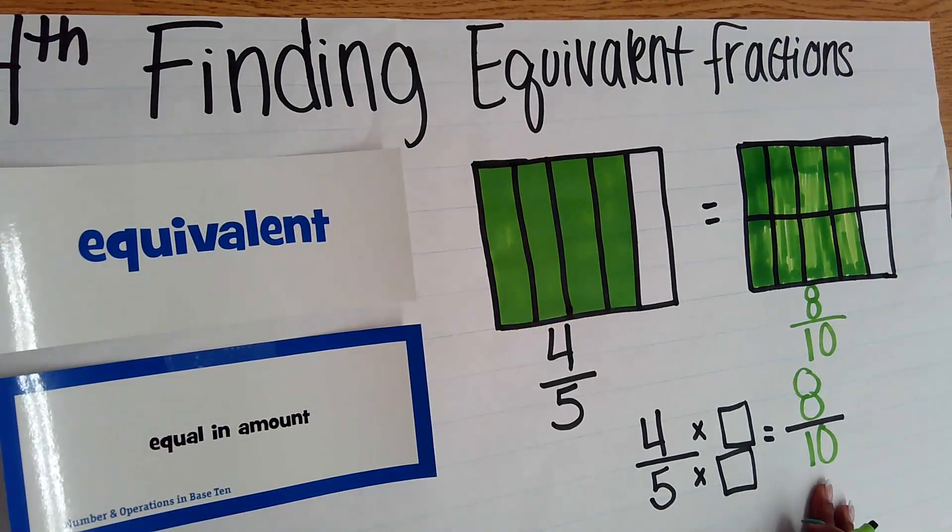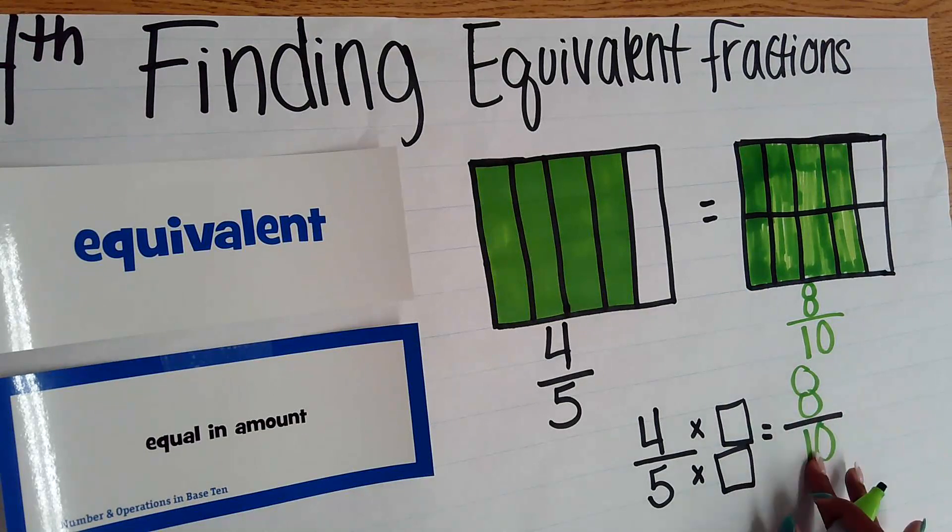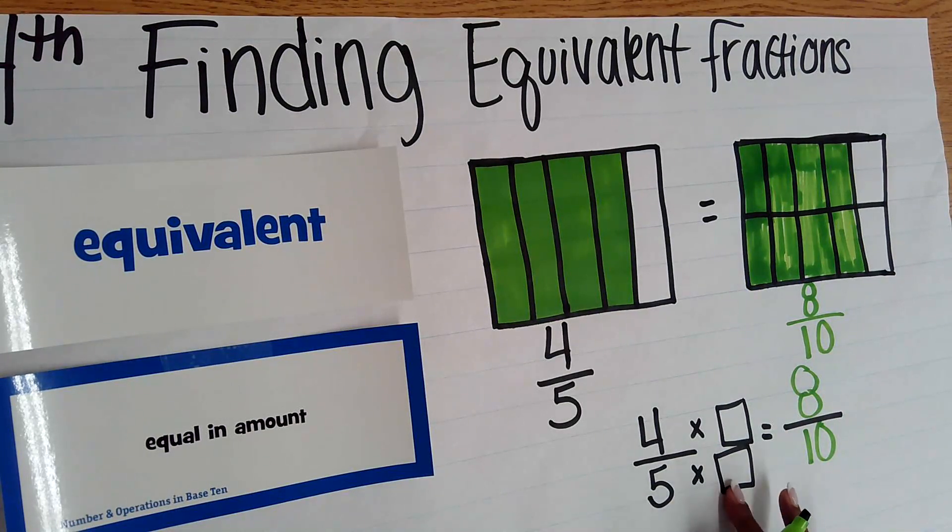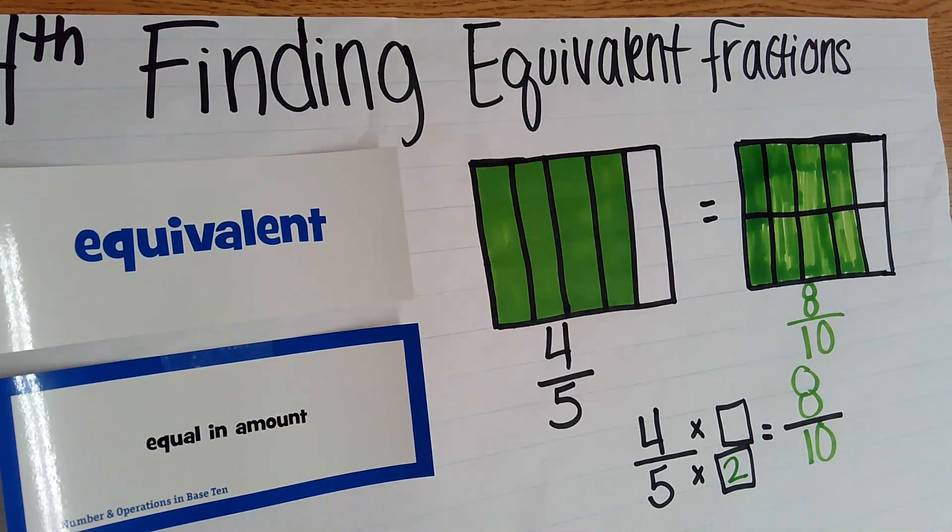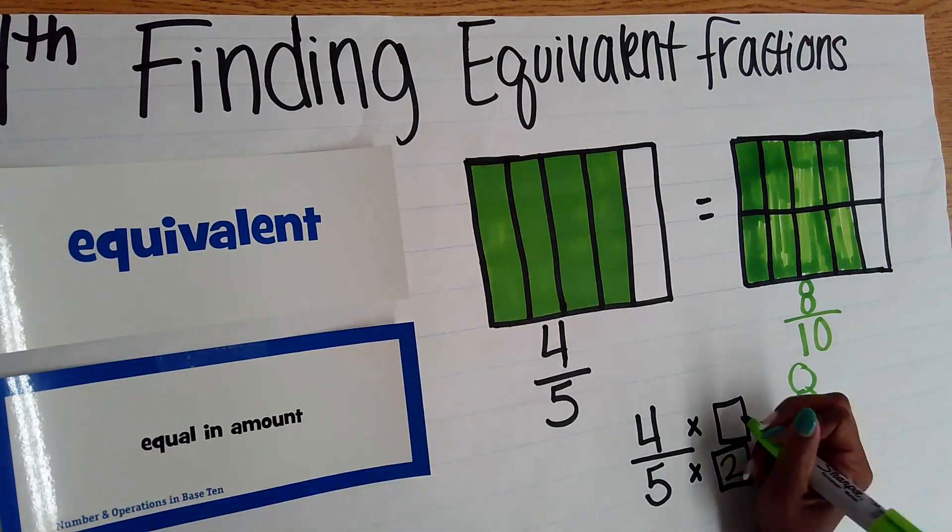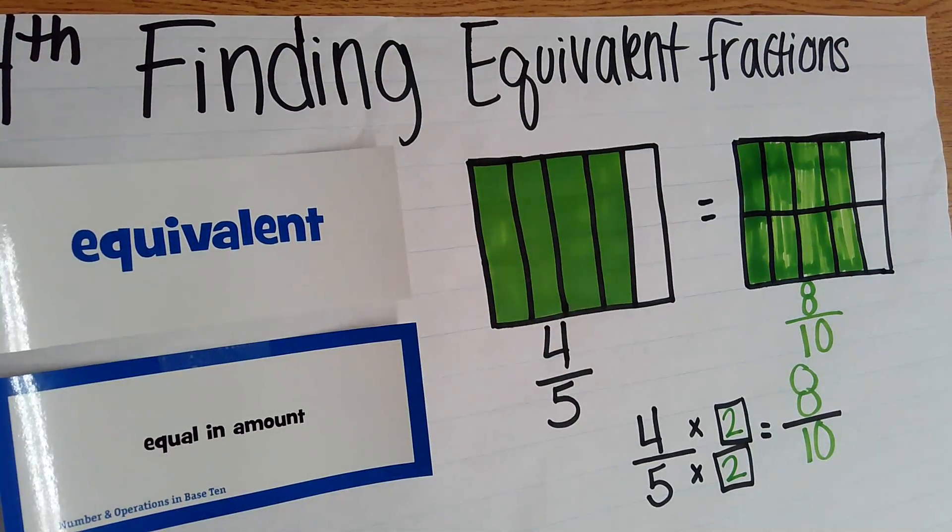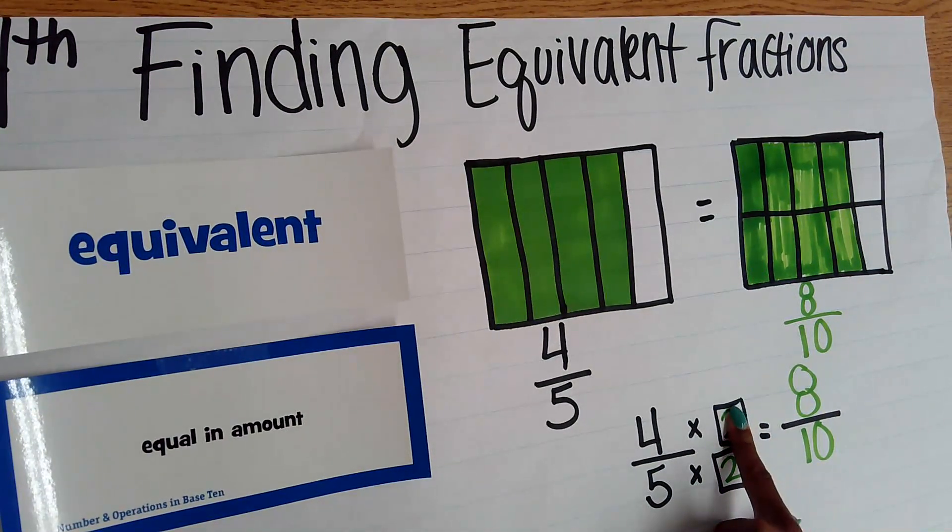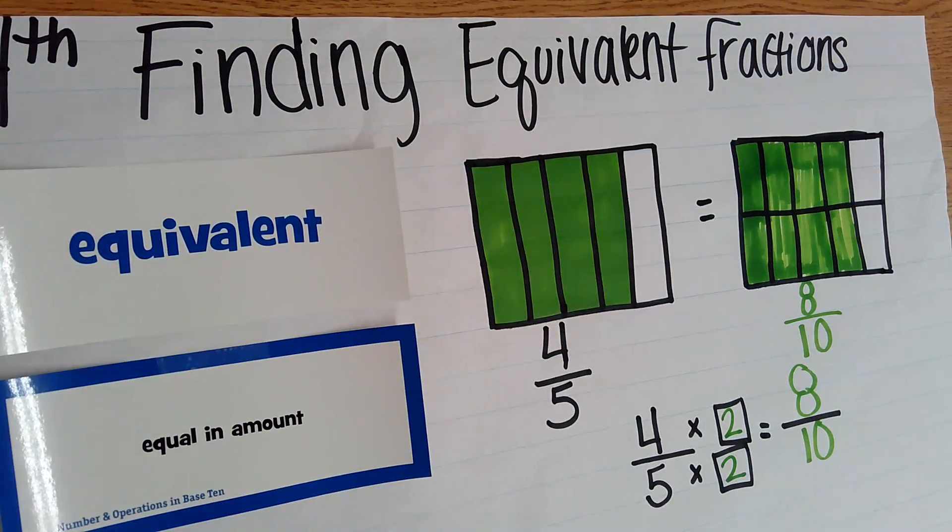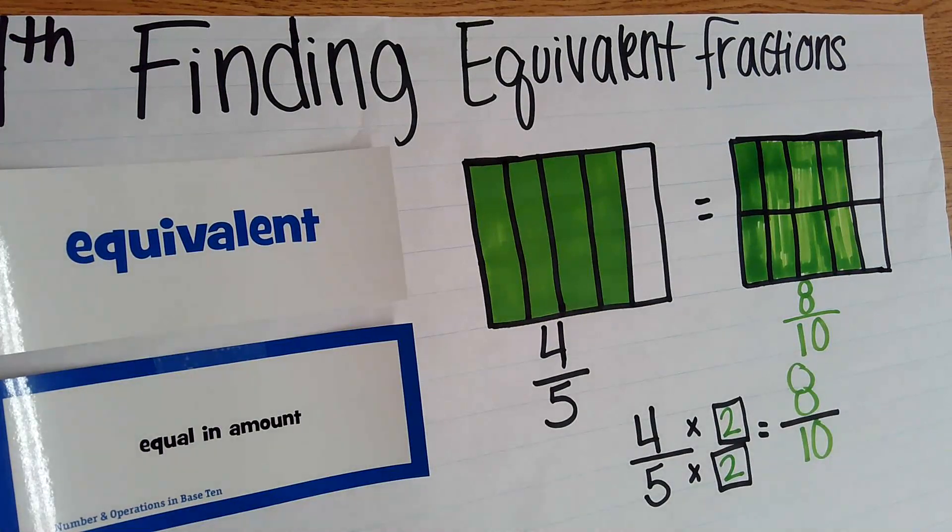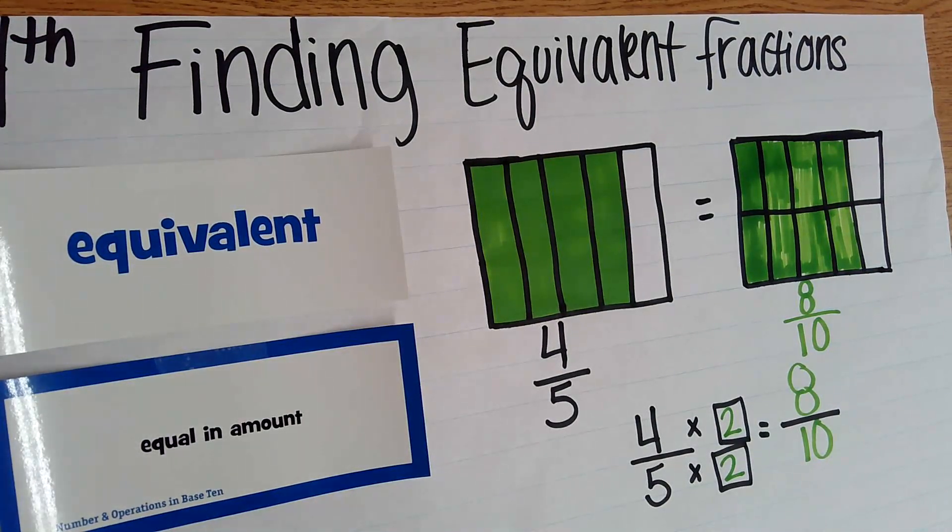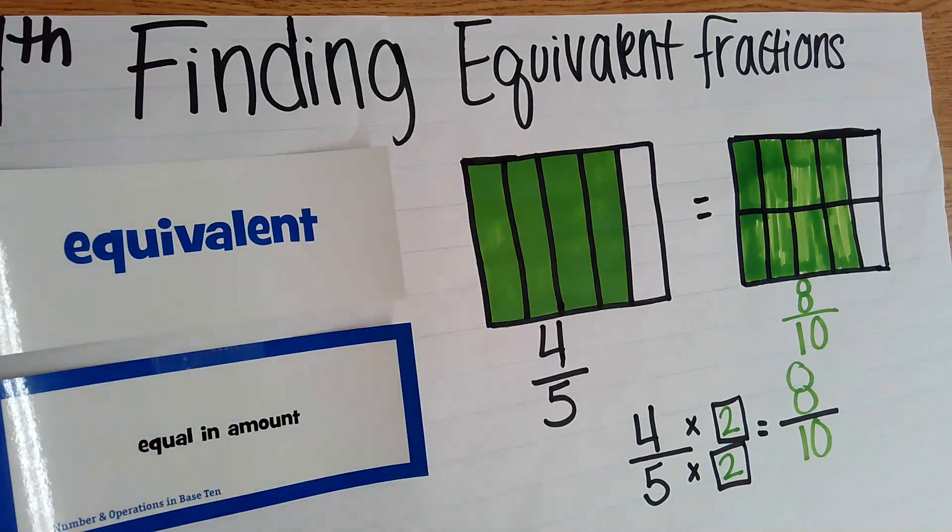That gives you an equivalent fraction. So I know eight tenths is equivalent, so I can think five times what equals ten? I know five times two equals ten, which means four times two should also equal eight. If this top answer was not two, I could not use it because it would not be equivalent. But four times two is eight, and five times two is ten. That is what makes four fifths and eight tenths equivalent. There are two times as many pieces in my eight tenths.